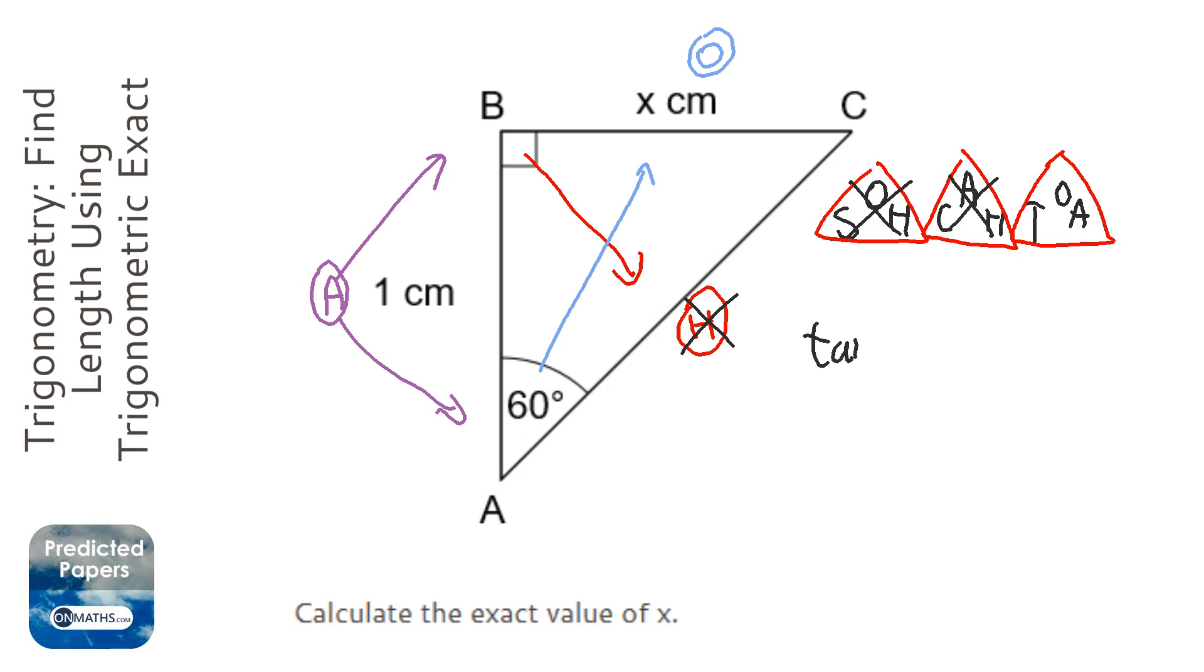Now TOA stands for tan the angle, which is 60 in this question, equaling opposite, which is X, over the adjacent, which is 1.